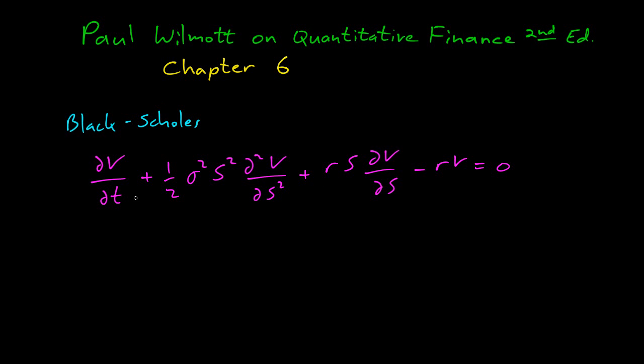Alright, so now let's try and understand this term by term. The first term is the change of the option price over time, and then it has three components. This one, this term here, and this term at the end. So what's the term at the end here? This is actually a reactive term.